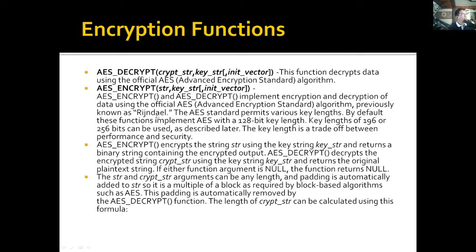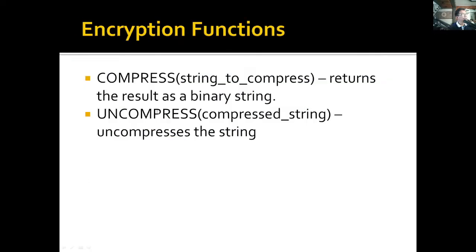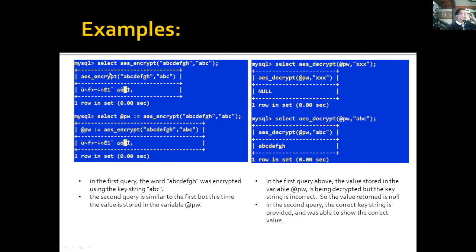Here is an example of AES_ENCRYPT and AES_DECRYPT. The word 'ABCDEF' was encrypted using the key 'ABC', producing this encrypted text. If someone gains access to this stored value, they will not be able to understand it — that's the purpose of encryption. In the second example, the encrypted value is also stored in the variable @PW, so we can use it in subsequent examples.